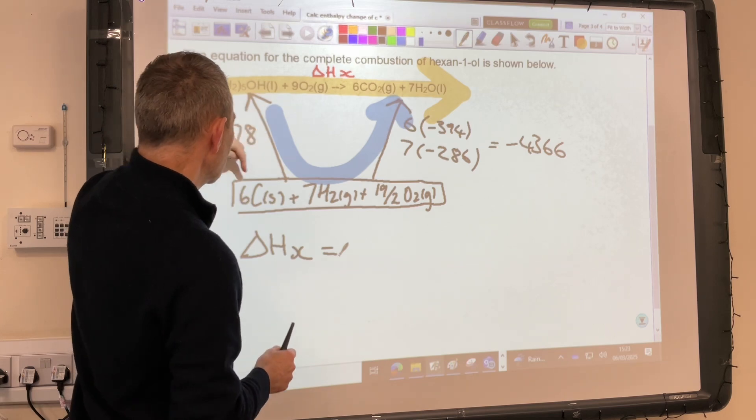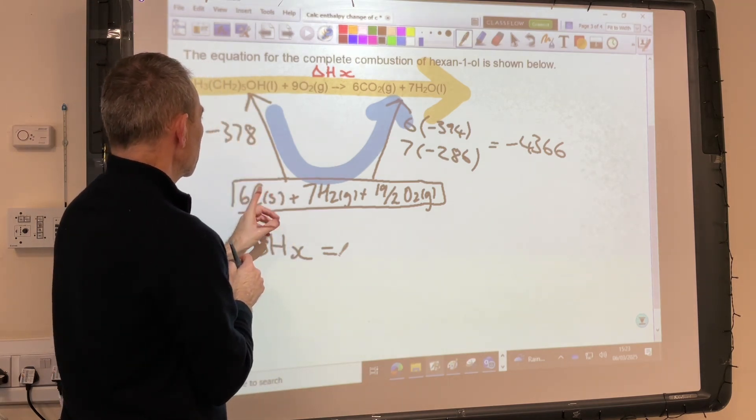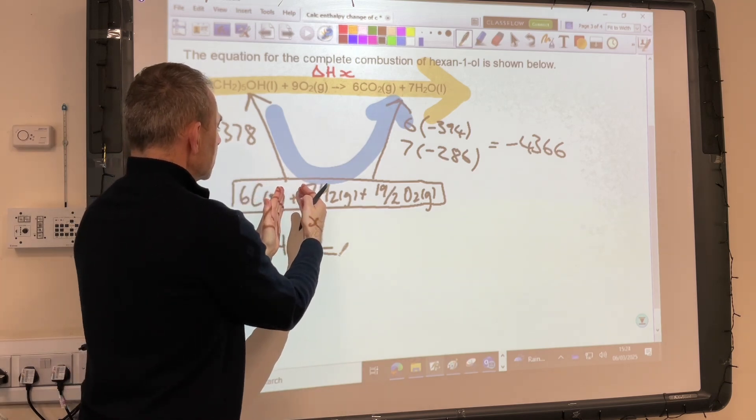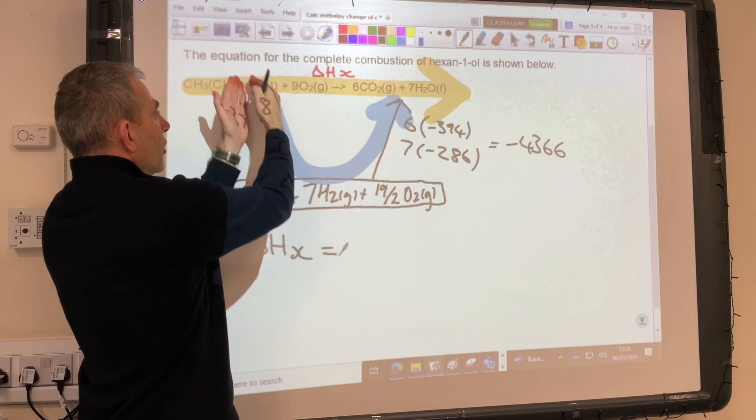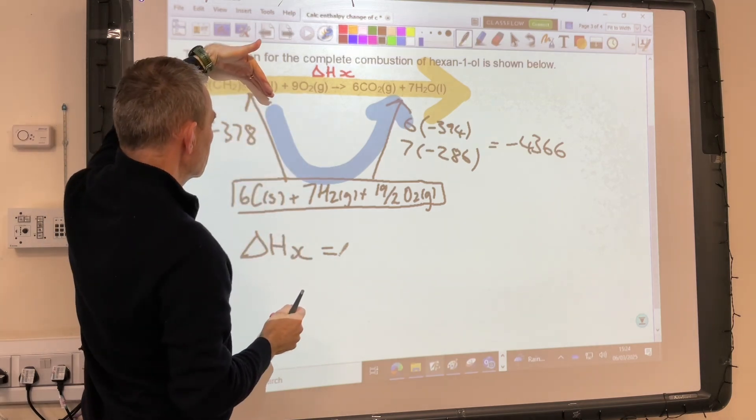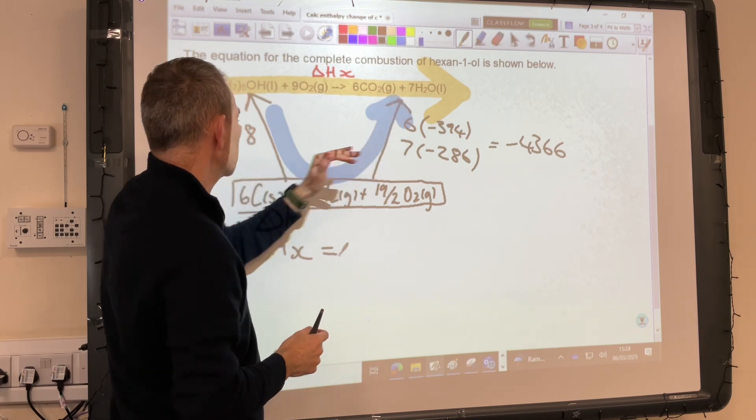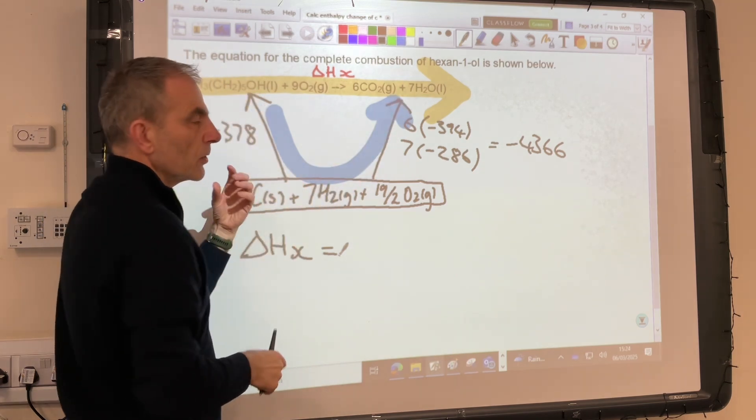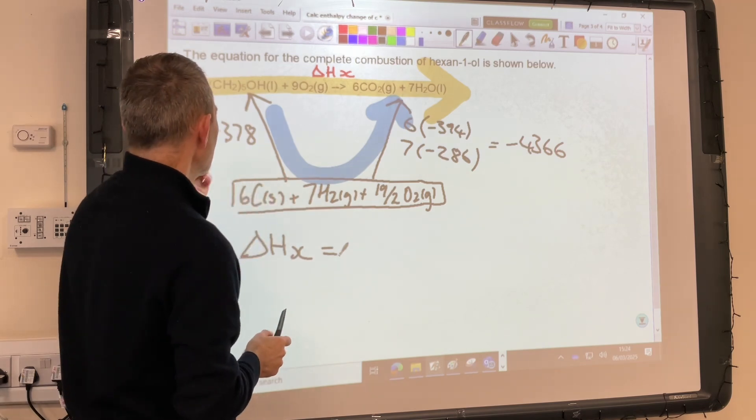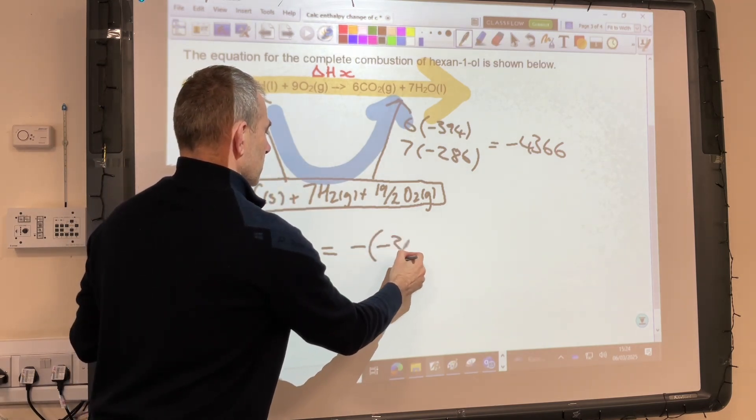But we've got to keep an eye on the arrow direction. So you notice this enthalpy change here, minus 378, represents the enthalpy change of formation of hexane-1-ol. So the arrow's going up, whereas the route, we want it to go down. So following the direction of that route. So the way around that, because that's going in the wrong direction, we subtract that enthalpy change. So all we need to do is go minus, minus 378.